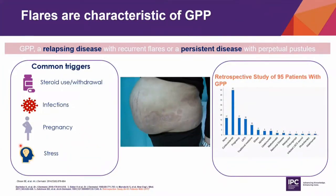Although some patients may have persistent disease with perpetual flares with minimal pustulation and intermittent flares of increased severity, most patients with GPP have a relapsing disease with recurrent flares and no pustulation between flares. GPP flares may occur de novo but most are triggered. Common triggers include use or withdrawal of systemic steroid, infection, pregnancy, and stress. In my local setting in Johor Bahru, use of systemic corticosteroid is often associated with GPP flare.